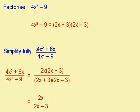I can see that there is a common factor of 2x and I take this out, leaving me with 2x plus 3. This fraction can then be simplified to 2x over 2x minus 3.